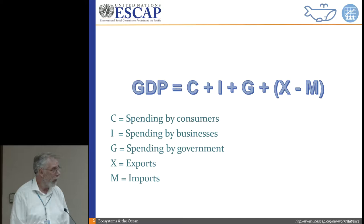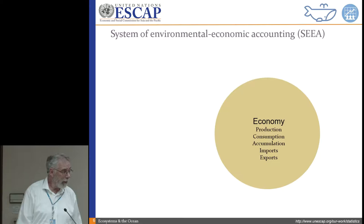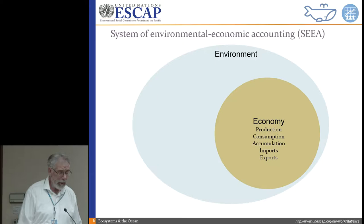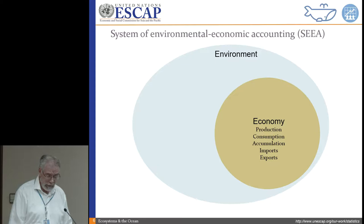The System of Environmental-Economic Accounting, or SEEA, is closely related to the System of National Accounts but measures things in physical terms. The SNA measures everything in prices, but we realize that the economy exists within an environment. The SNA 2008 says if you want to know about natural inputs to the economy, look to the SEEA. The SEEA is the only other international statistical standard besides the System of National Accounts — and it's only 350 pages.